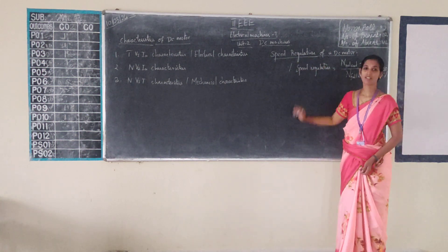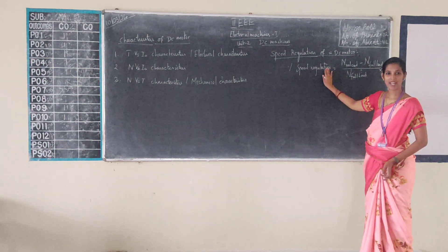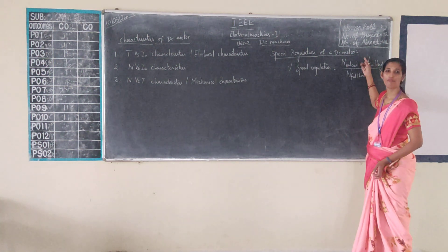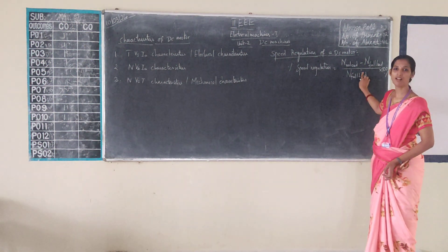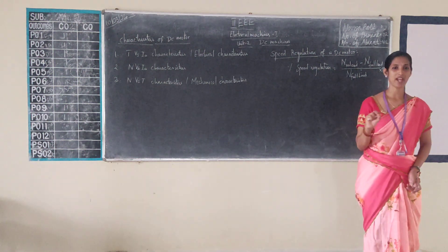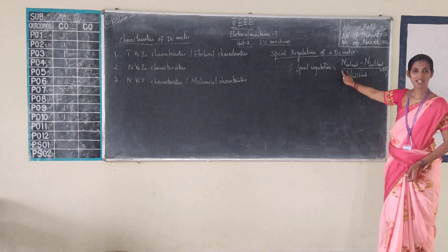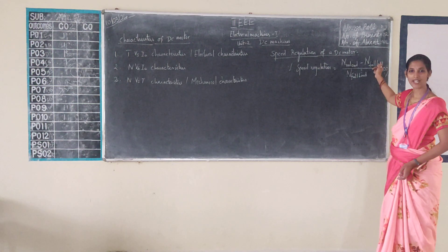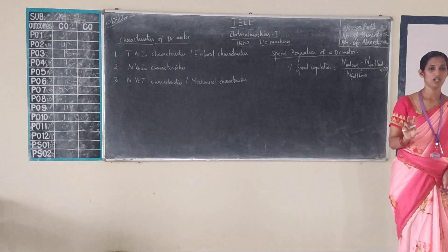The speed variation of the air is defined as the changes of speed from low load to full load conditions, to the speed corresponding to the full load conditions. So the speed variation is defined as the ratio of changes of speed from low load to full load conditions, to the speed corresponding to the full load conditions.